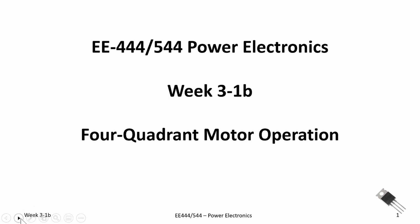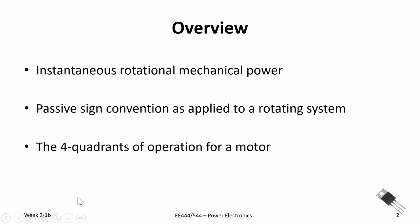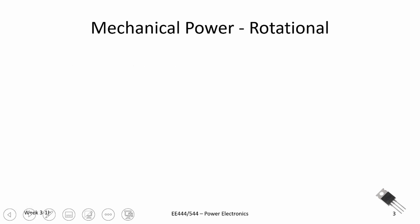So having a good understanding of four-quadrant motor operation is helpful for that design project. Let's look at the overview of where we're going to go with this video segment. One of the things I want to talk about first is what's called instantaneous rotational mechanical power — it is very similar to instantaneous electrical power. I also want to talk about passive sign convention as it applies to a rotating system or rotating machine, and finally we'll touch on the four different quadrants of operation for a motor.